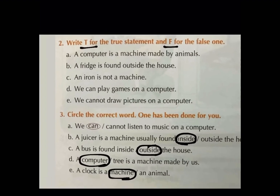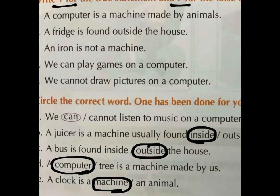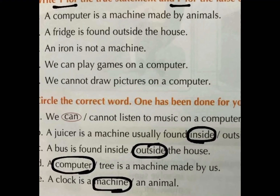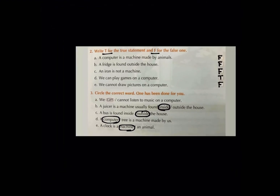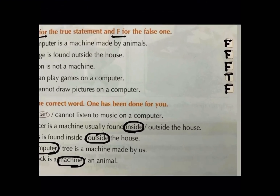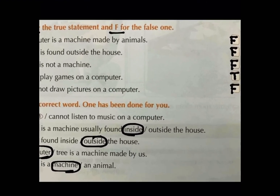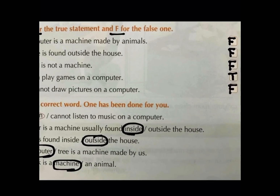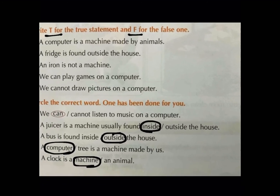Second: A fridge is found outside the house. Is it true or false? Kia refrigerator ya fridge ghar ke bahar hota hai? No. It is not outside the house. So, yeh bhi statement kia hua? False. Write down F for false in the second box.